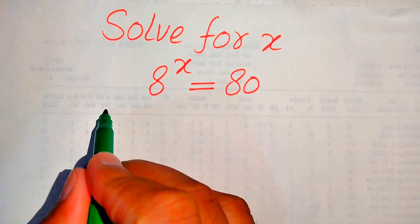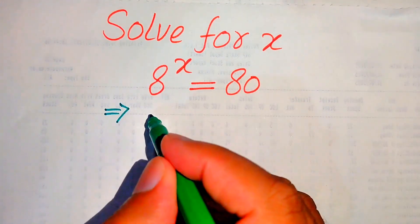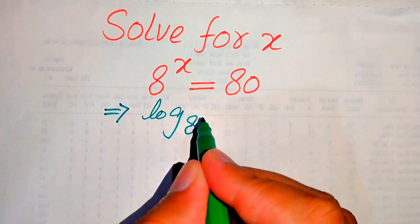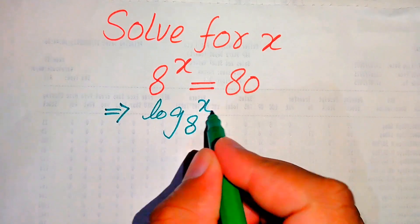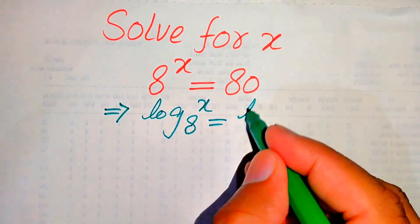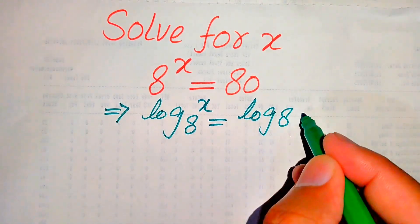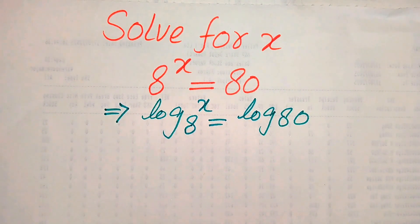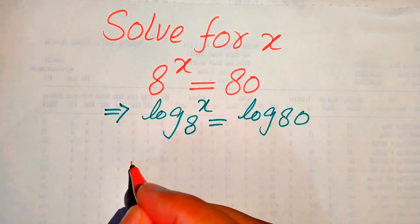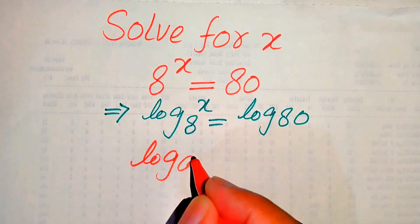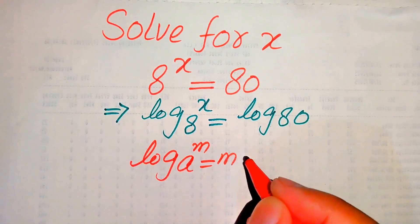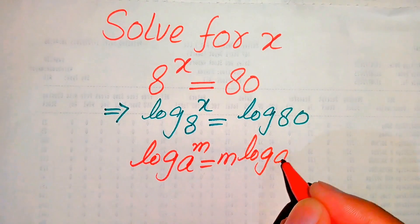The very first thing we are going to do is take log on both sides. It will be written as log of 8 to the power of x equals log of 80. Now in the next step we use the nice property of log: if we have log of a to the power of m, it equals m times log a.